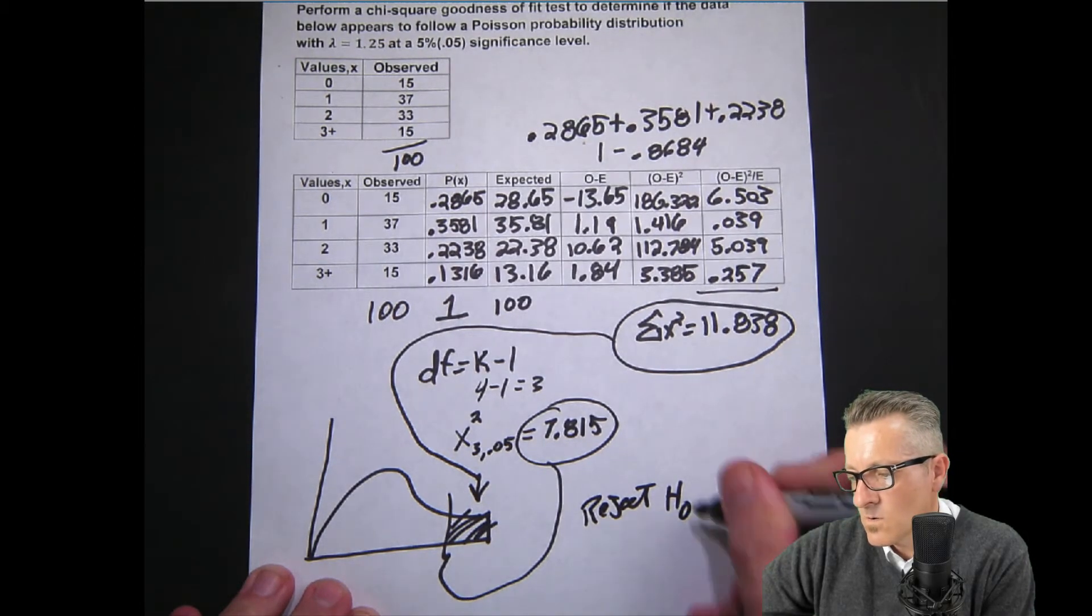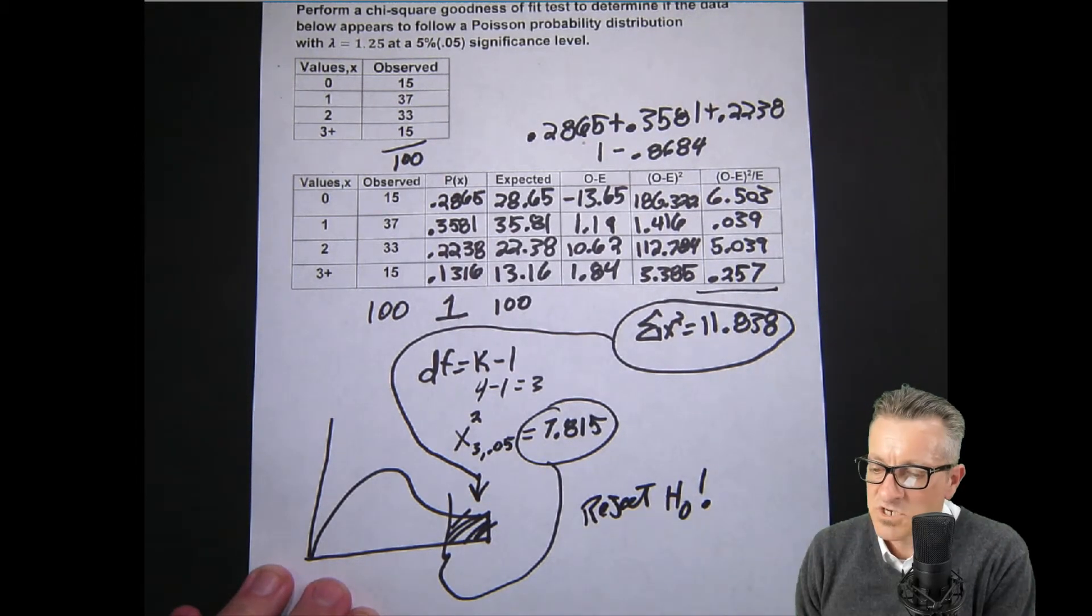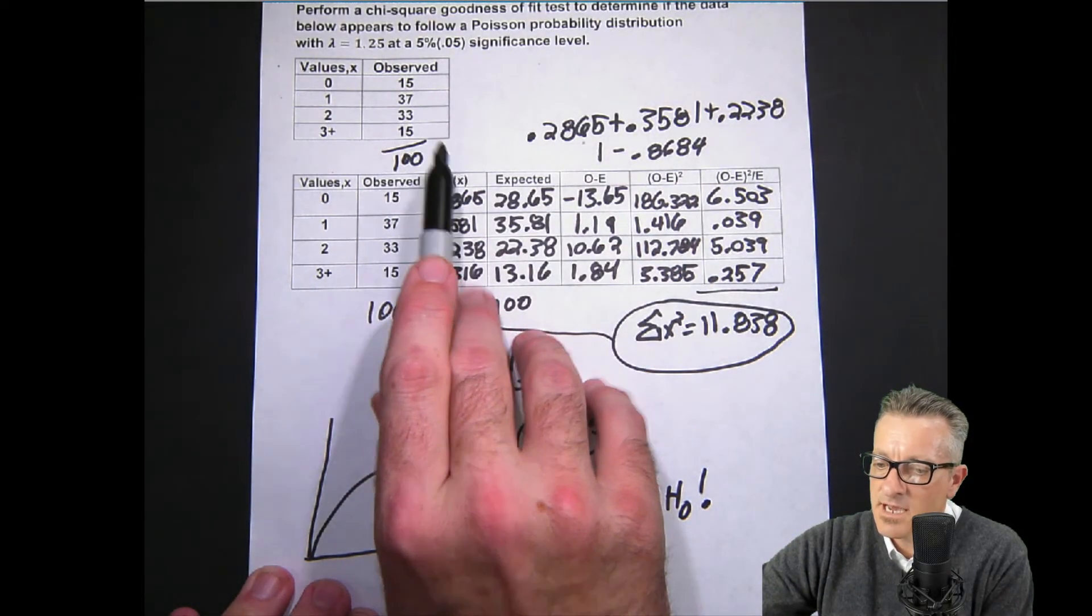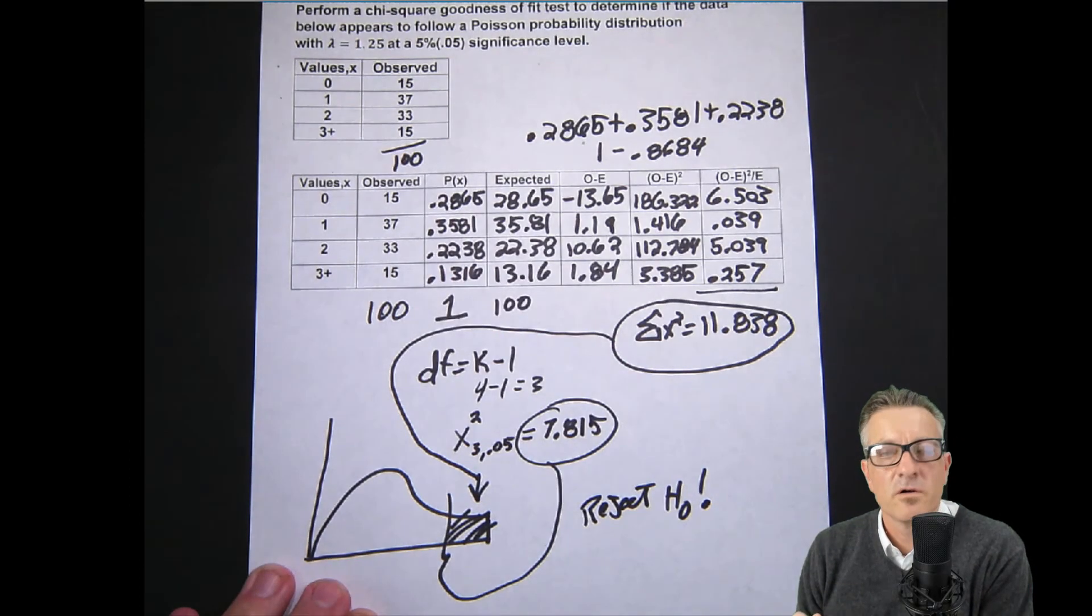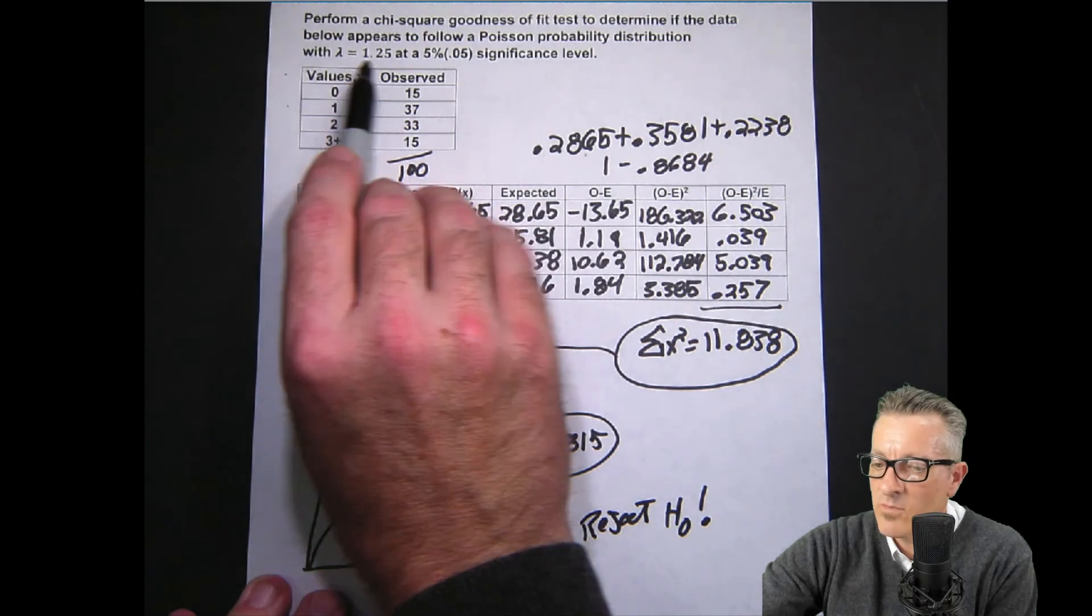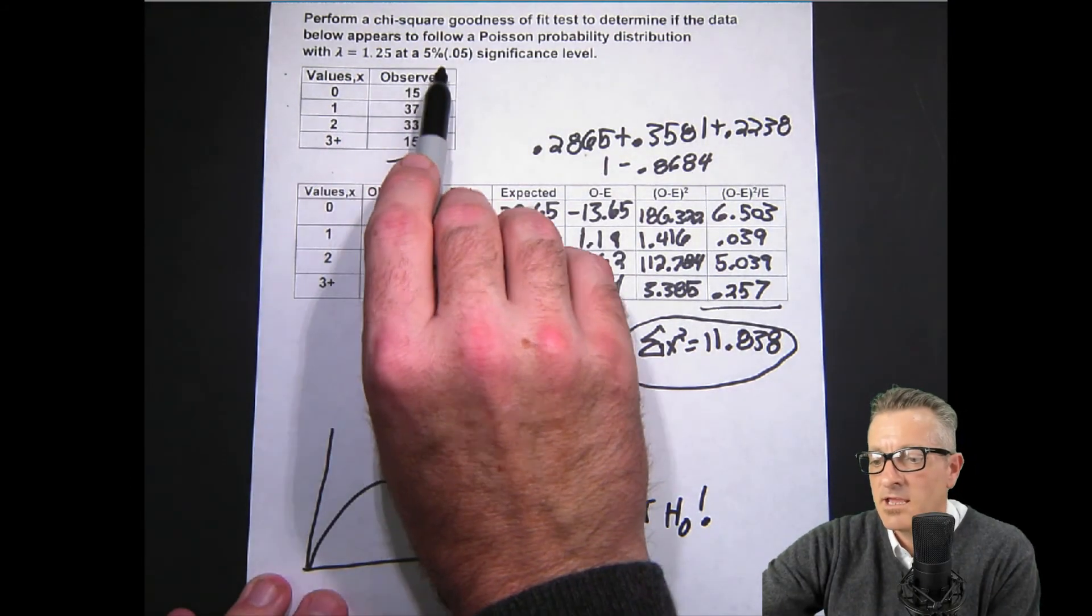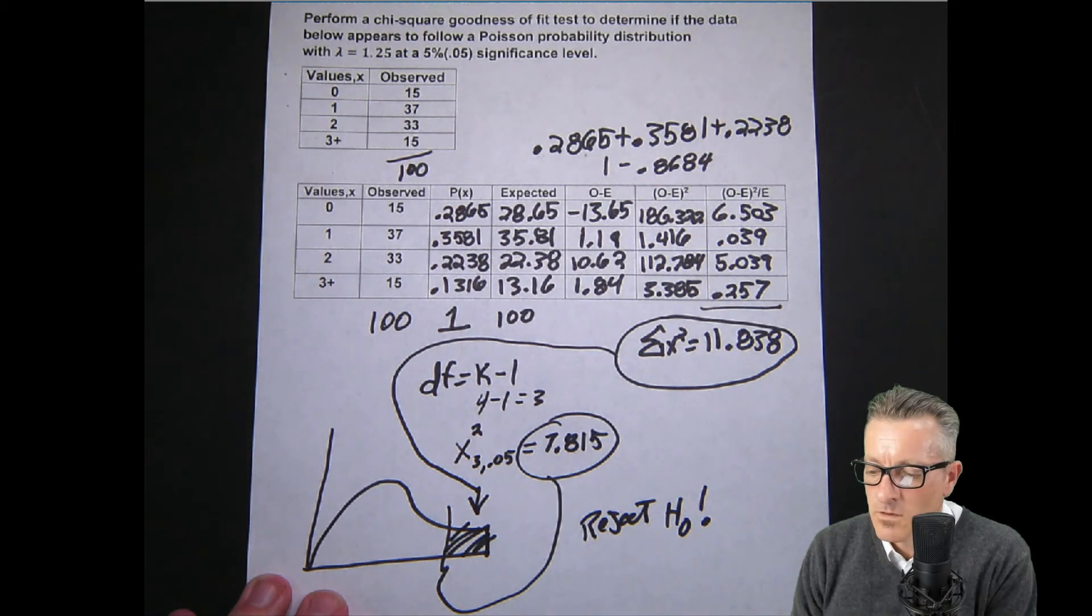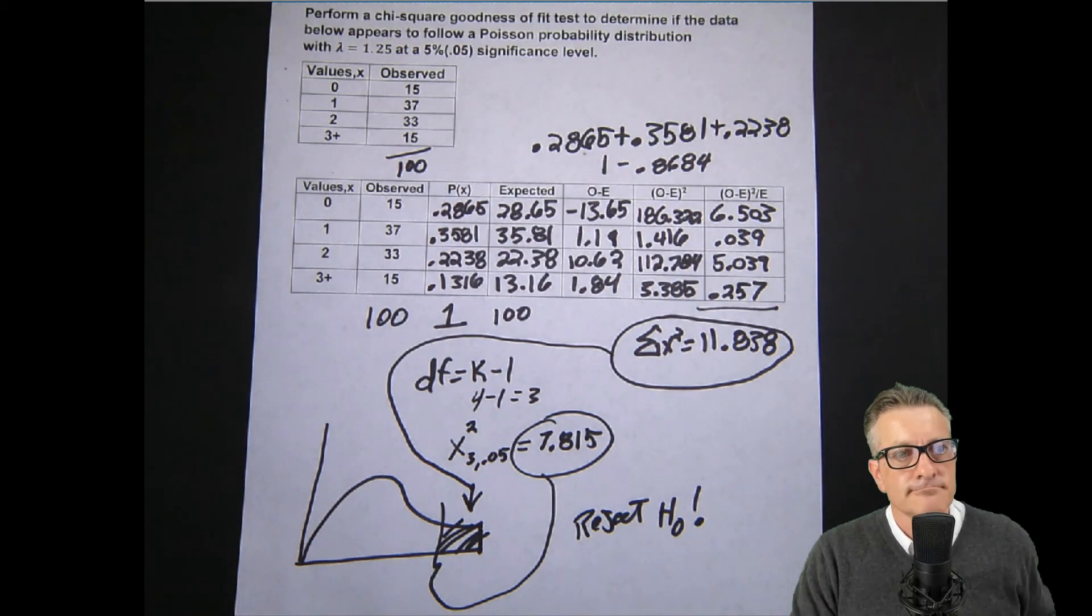Which means in this problem, it does not appear to follow the Poisson probability distribution with a lambda of 1.25 at a 5% level of significance. Thank you for watching.